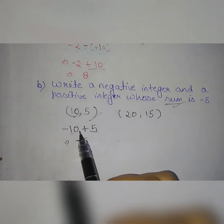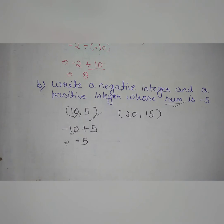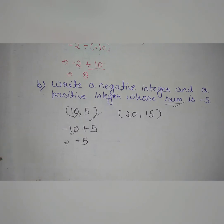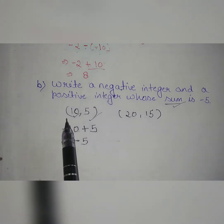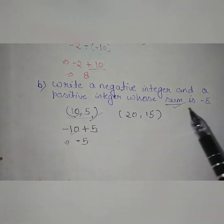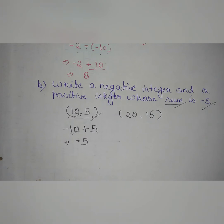The answer is minus 5 because the greater integer is negative, that is minus 10. So this is the pair by which we got our answer of minus 5. Now let's see our third part.